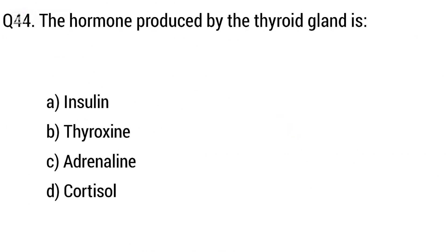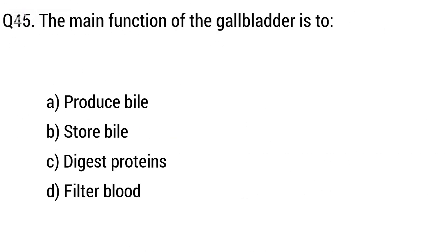Question 44. The hormone produced by the thyroid gland is? The right answer is option B: Thyroxine.